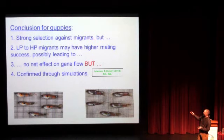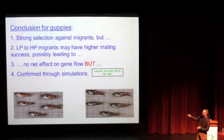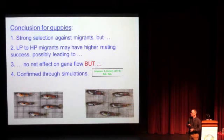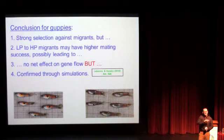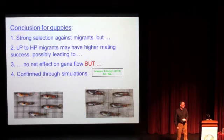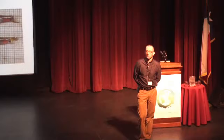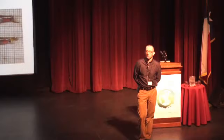To summarize guppies: we found evidence for strong selection against migrants, but low-to-high predation migrants may have higher mating success, possibly leading to no net effect on gene flow. This is also a reference to what Brian pointed out — that neutral genetic markers are not very good for detecting progress toward ecological speciation. Using simulations, we showed that these two counteracting effects — selection against migrants but higher mating success — can indeed lead to no net effects on gene flow.